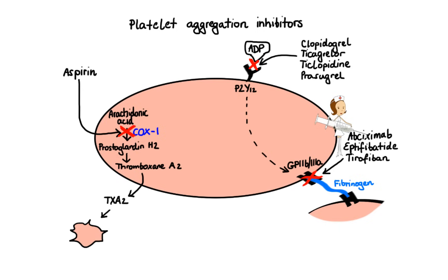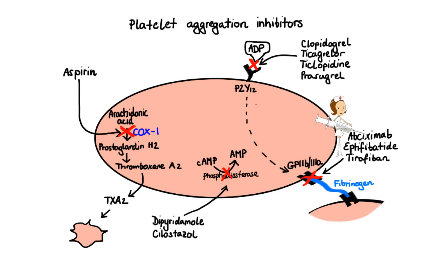The last group of antiplatelet drugs are phosphodiesterase inhibitors, namely dipyridamole and cilostazol. These two agents inhibit the enzyme phosphodiesterase, which is responsible for breaking down cyclic AMP to AMP. By blocking this enzyme, dipyridamole and cilostazol increase intracellular levels of cyclic AMP, which leads to a decrease in intracellular calcium and ultimately inhibition of platelet activation. These agents also inhibit phosphodiesterase in the vascular wall and the uptake of adenosine, promoting vasodilation. Cilostazol in particular is often used to treat symptoms of peripheral artery disease, such as narrowing of vessels supplying blood to the legs.